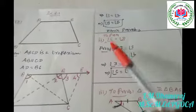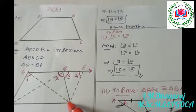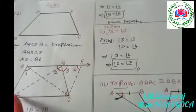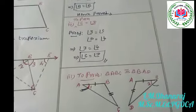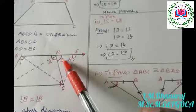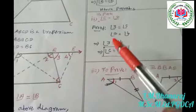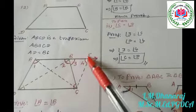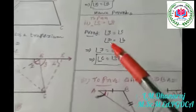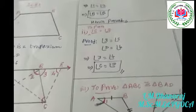From this, we can say angle one is equal to angle two, which proves angle A is equal to angle B. For the second subdivision, we prove angle C is equal to angle D. Angle three is equal to angle C because they are alternate interior angles.